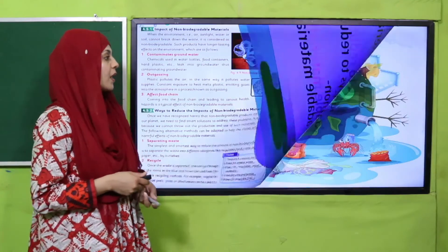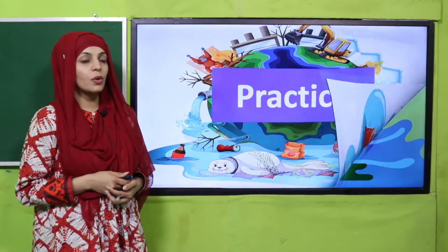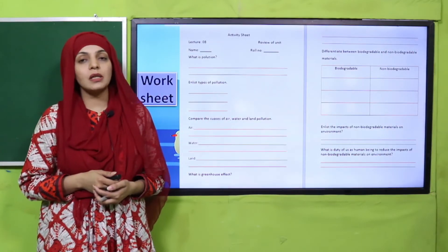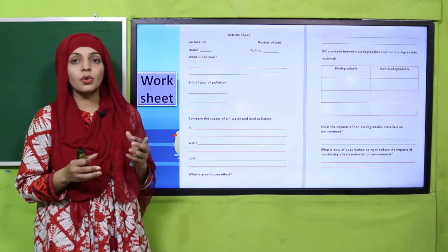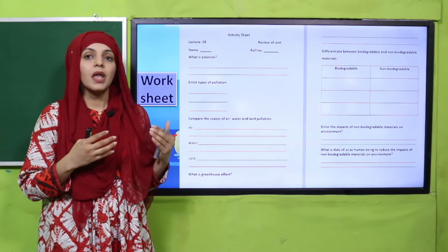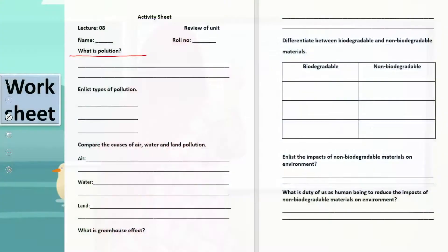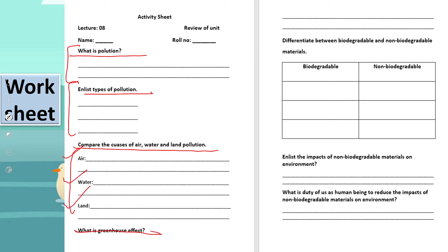Now it is time for evaluation and practice. You can download this worksheet from the description box below this video, or you can get it in print from your teacher. Listen to the questions very carefully, pause the video after listening, and then complete your worksheet. Questions include: What is pollution? Define it. Enlist the types of pollution. Compare the causes of air, water, and land pollution.